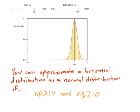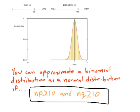So this leads to a really key idea. You can approximate a binomial distribution as a normal distribution if, and then here's just kind of a rule of thumb that we're going to talk about. The rule of thumb is you're allowed to do this when n times p is greater than or equal to 10, and n times q is greater than or equal to 10.